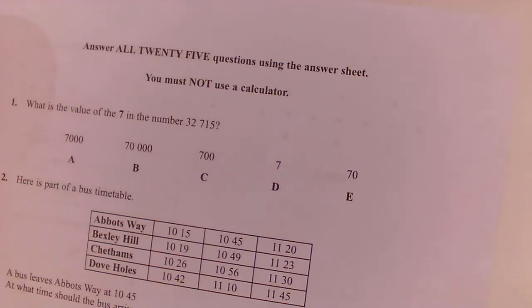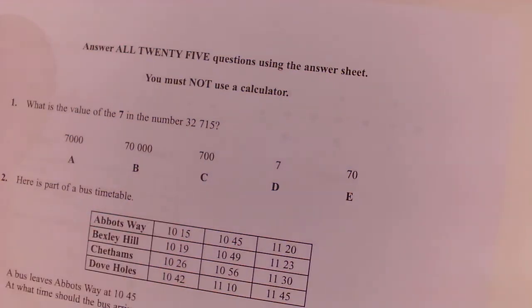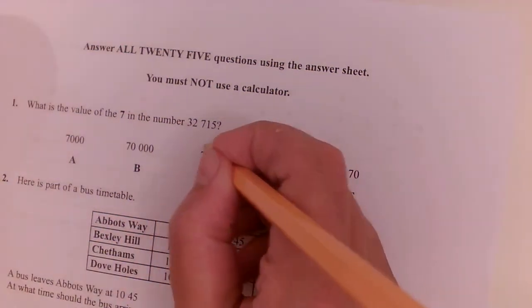Okay, question number one. Work out the value of the 7 in 32,715. So the value of the 7 is 700. C.